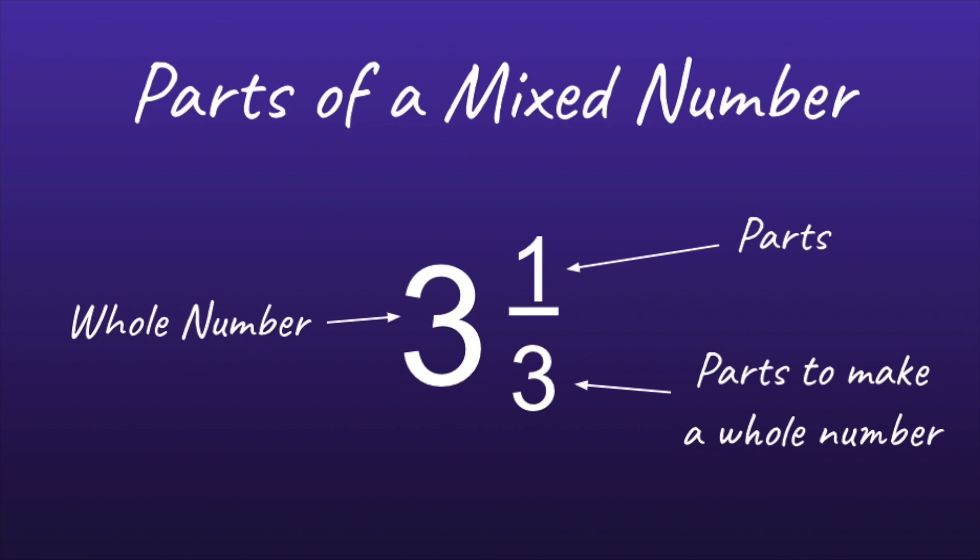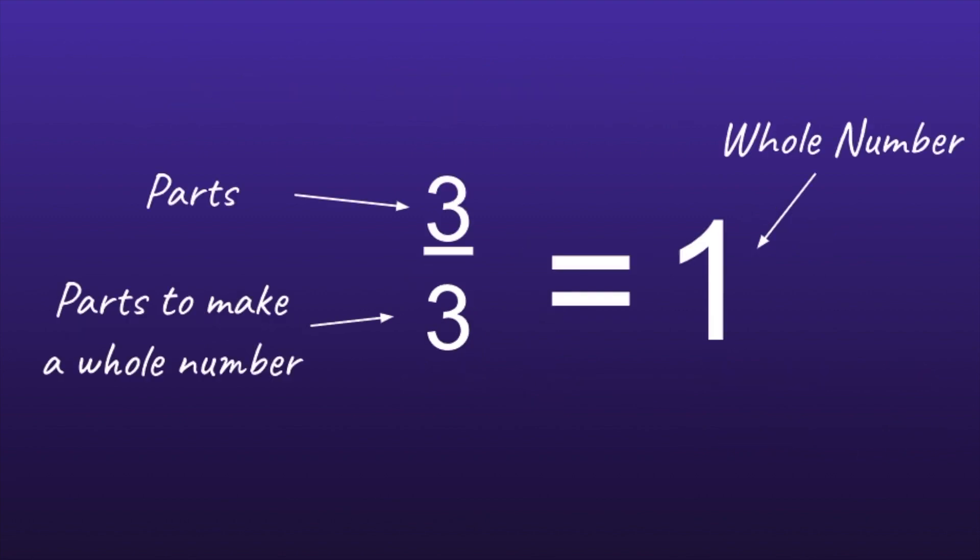It's important to note that when the parts is equal to the parts to make a whole number, then instead of the fraction 3 over 3, we could change it to the whole number 1.